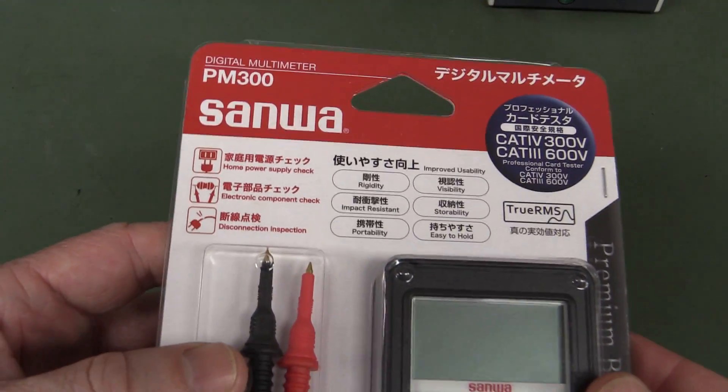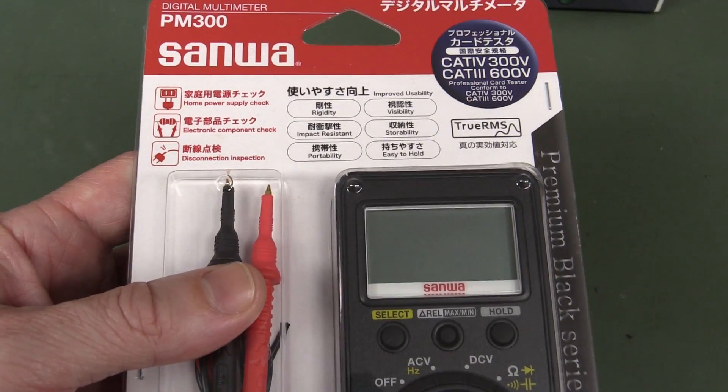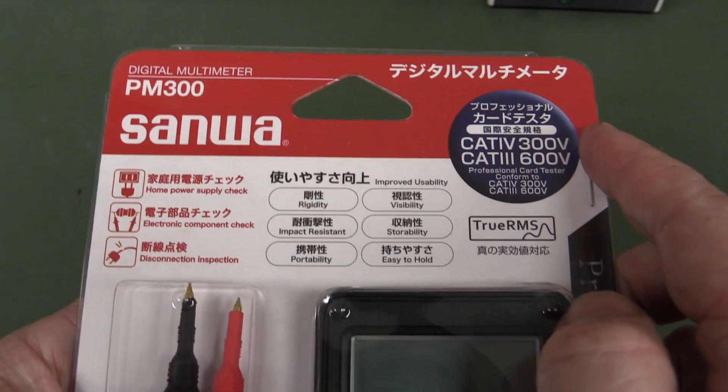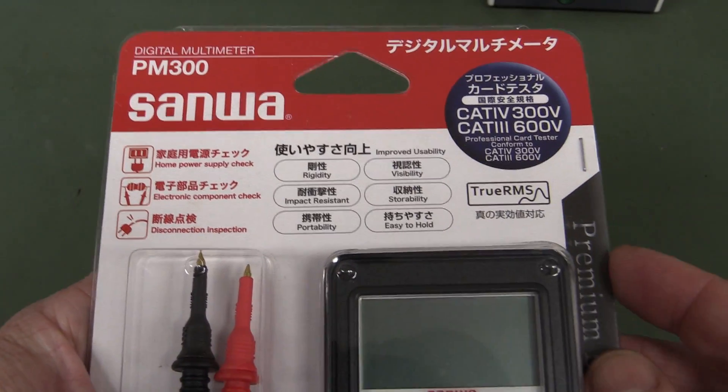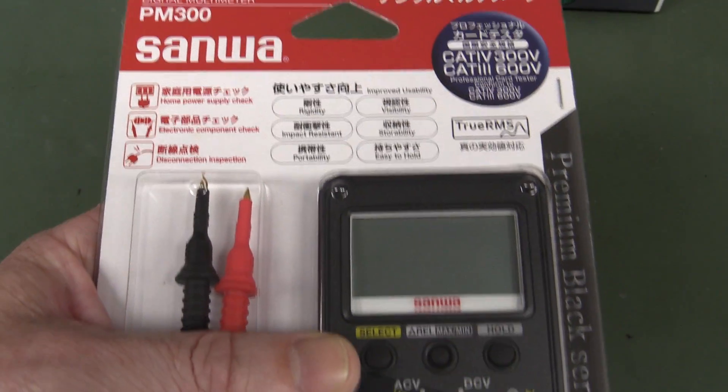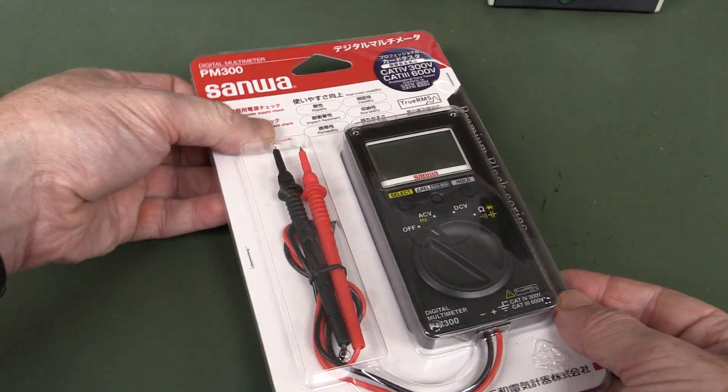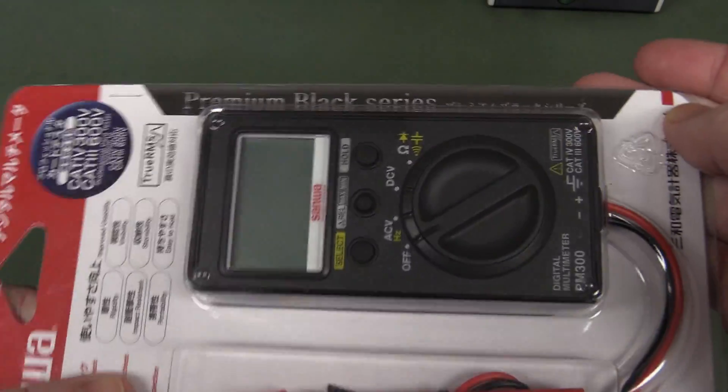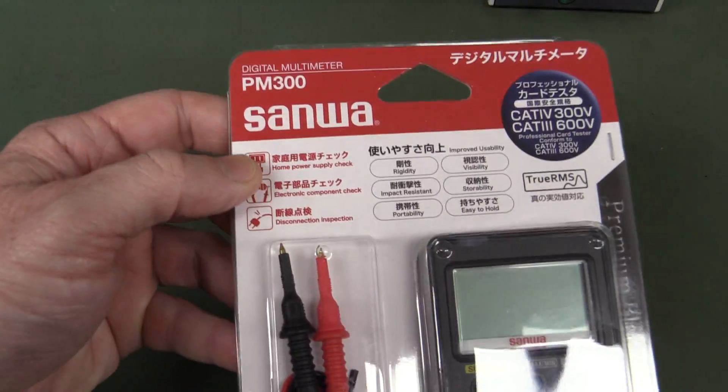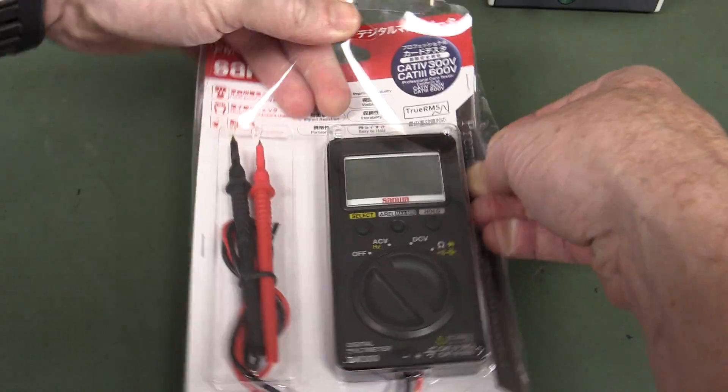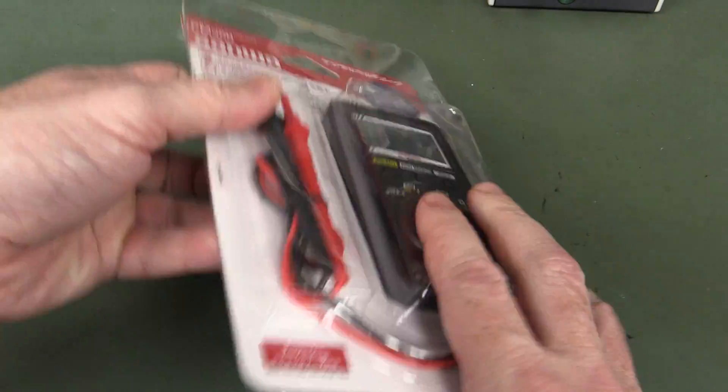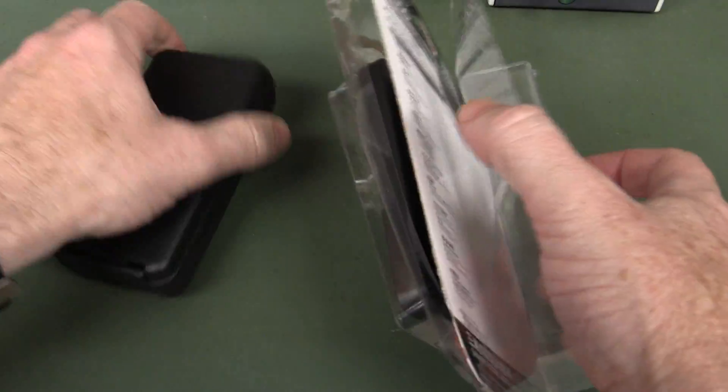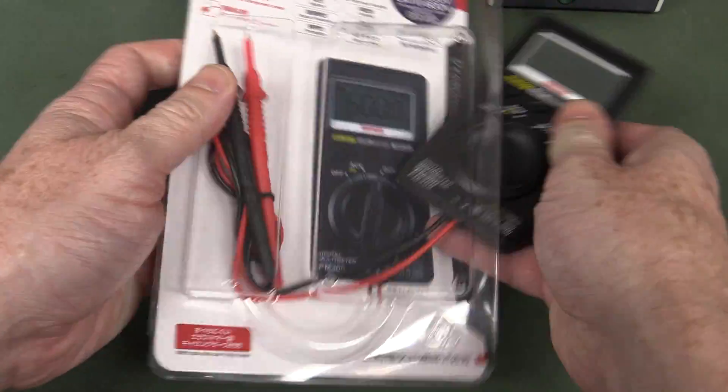So let's check it out. It's the new Sanwa PM300 pocket multimeter, and as far as I'm aware it's pretty much the only one with a CAT4 rating. So CAT4 300 volts, CAT3 600 volts, and it is a true pocket multimeter. Let's have a look. It's the premium black series and it comes from Sanwa, of course, famous Japanese multimeter company who've been around forever, and hence why there's Japanese all over this thing.